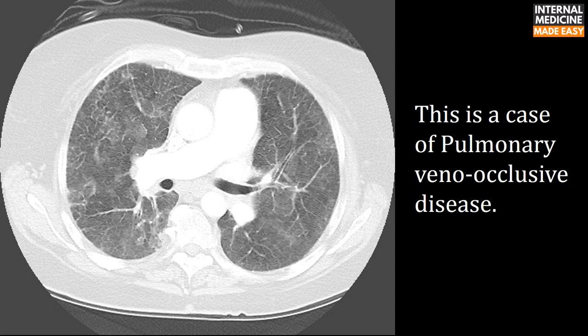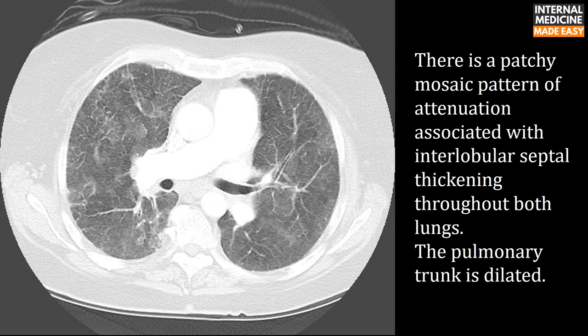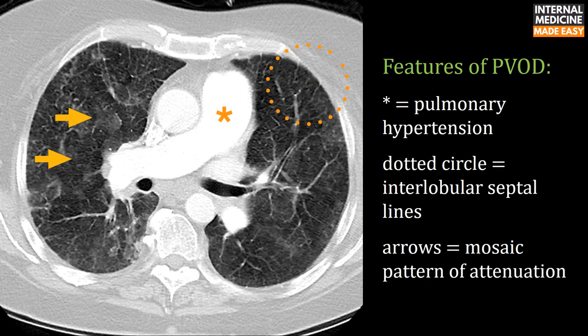This is a case of pulmonary veno-occlusive disease, showing a patchy mosaic pattern of attenuation associated with interlobular septal thickening throughout both lungs, with a dilated pulmonary trunk. The star symbol shows pulmonary hypertension, the dotted circle shows interlobular septal lines, and the arrows show the mosaic pattern of attenuation.